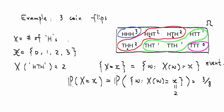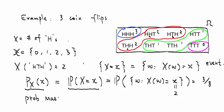We give this probability a name and use a special notation. We call it p subscript X — to indicate which random variable we are talking about — and then put the realization of x into the function. We call this function the probability mass function, or PMF.